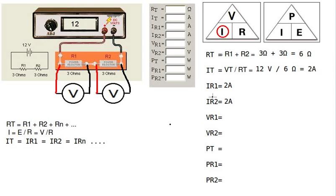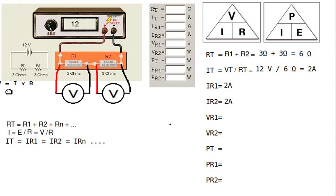So let's calculate those voltages. The general formula for voltage from Ohm's Law — using our memory aid — says: cover up voltage, and that gives us I times R. So voltage equals I times R. That is our general formula: V equals I times R.